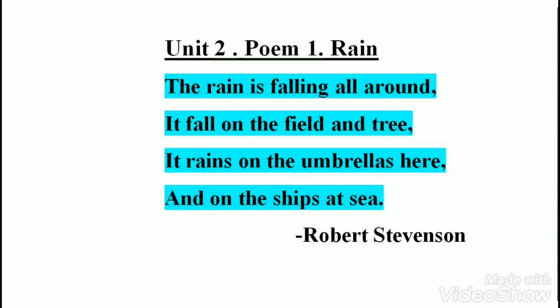Let us read the whole poem once again. English unit 2, poem 1: Rain. The rain is falling all around. It falls on the field and tree. It rains on the umbrellas here and on the ships at sea. Poem written by Robert Stevenson. I hope this poetry is clear to you. Thank you.